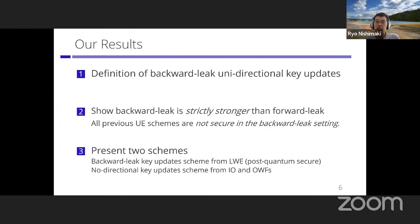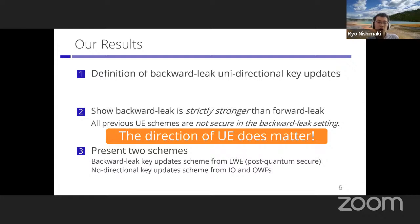We introduce the definition of backward-leak unidirectional key updates. Surprisingly, backward-leak unidirectional key updates are strictly stronger than forward-leak unidirectional key updates — a sharp contrast to JAN's equivalence theorem. Existing secure UE schemes in the forward-leak setting are not secure in the backward-leak setting. We also provide a construction secure in the backward-leak setting under the Learning With Errors assumption, and another construction secure in the no-directional setting based on indistinguishability obfuscation and one-way functions. The take-home message: the direction of updatable encryption does matter.